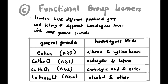Now let's look at functional group isomers — isomers that have a totally different functional group and belong to different homolog series, but share the same general formula. For CₙH₂ₙ: alkene and cycloalkane. For CₙH₂ₙO: aldehyde and ketone. For CₙH₂ₙO₂: carboxylic acid and ester. For CₙH₂ₙ₊₂O: alcohol and ether. You will need to memorize these four pairs.